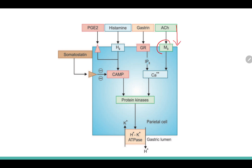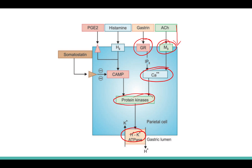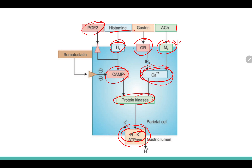Acetylcholine binds to M3 receptors and gastrin binds to gastrin receptors; both increase intracellular calcium, which stimulates protein kinases, which stimulate hydrogen-potassium ATPase and increase HCl synthesis. Histamine binds to H2 receptors and instead of increasing intracellular calcium, it stimulates cAMP (cyclic AMP). This cAMP stimulates protein kinases, which again stimulate potassium-hydrogen ATPase and increase HCl. PGE2 and somatostatin inhibit cAMP.